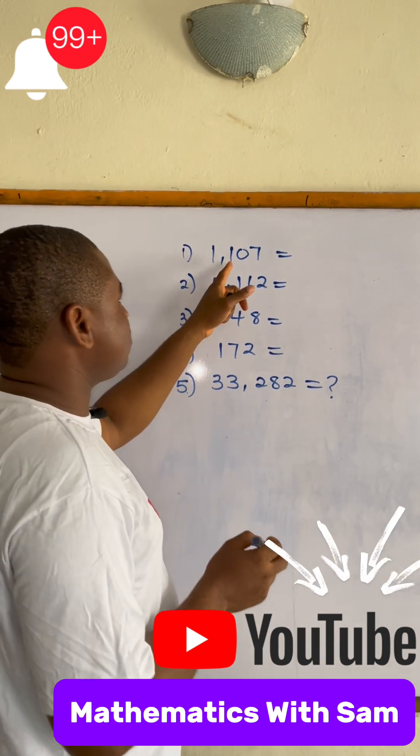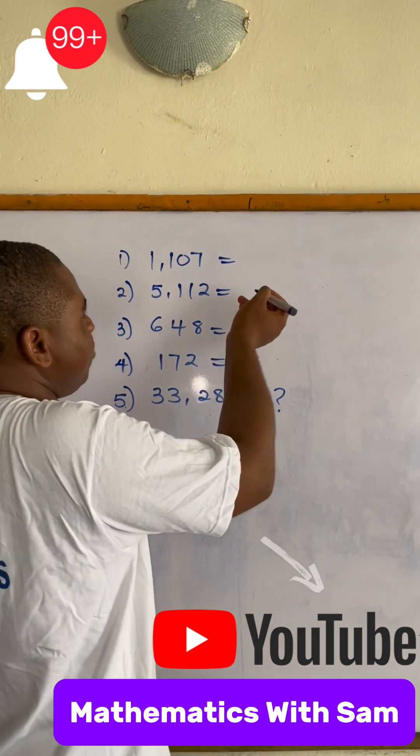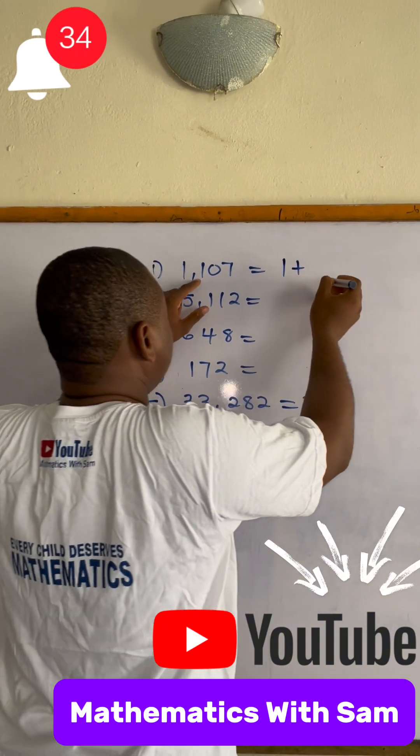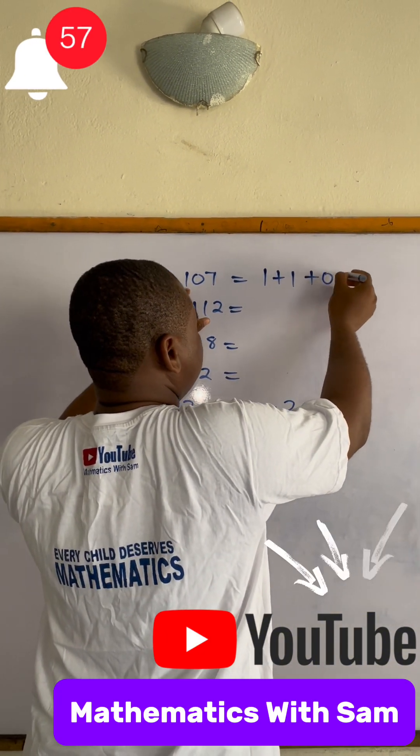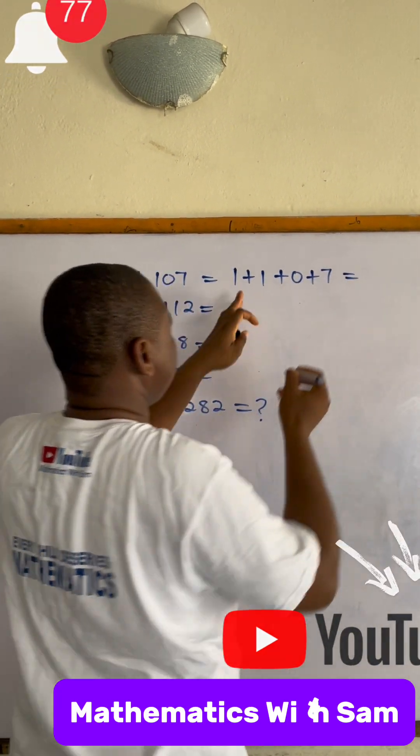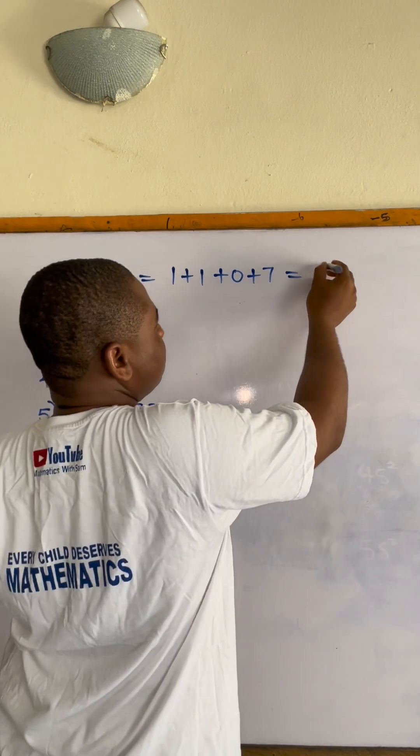For instance, we have 1,107. Is it divisible by 9? Let's see: 1 plus 1 plus 0 plus 7. So 1 plus 1 plus 7 will give us 9.